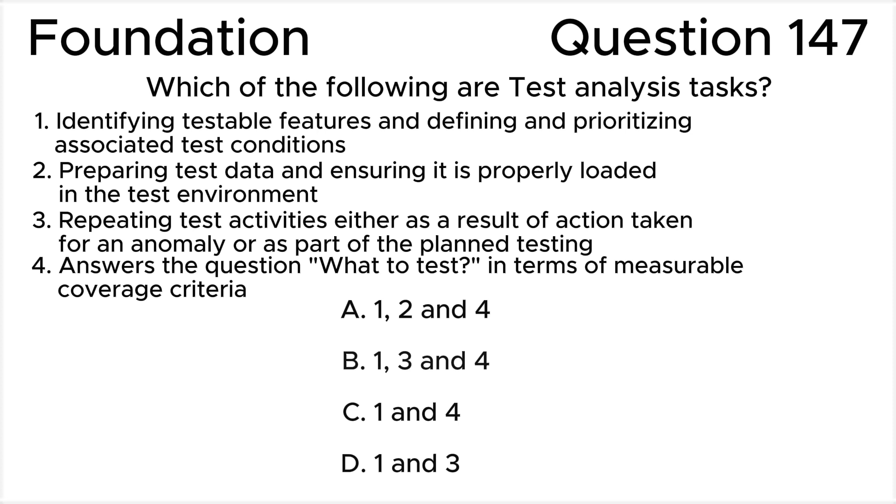3. Repeating test activities either as a result of action taken for an anomaly or as part of the planned testing. 4. Answers the question 'what to test' in terms of measurable coverage criteria. Answer choices: A. 1, 2 and 4, B. 1, 3 and 4, C. 1 and 4, D. 1 and 3.